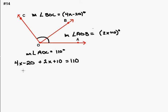Combining our like terms, we have 6x and negative 20 plus 10 is negative 10 equals 110. Adding 10 to both sides of the resulting equation, we wind up getting 6x equals 120.